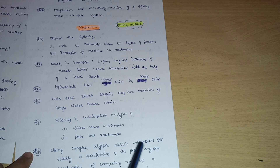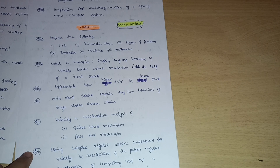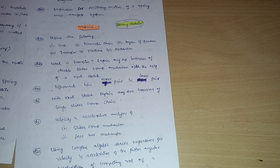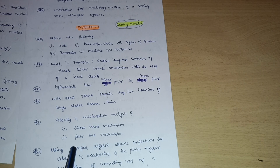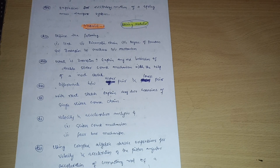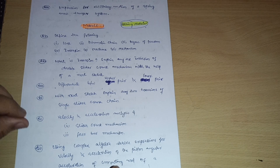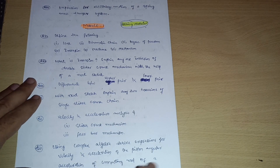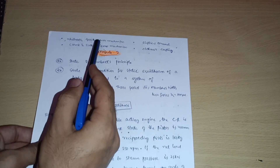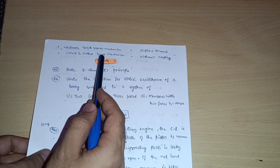Using complex algebra, derive expressions for velocity and acceleration of the piston and angular acceleration of the connecting rod of a single crank mechanism. You should also go through problems on this complex algebra method, which come in various forms. For previous year papers, search 'COM papers 18 scheme' on Google to get a variety of questions to practice. Also cover some theoretical questions like the Whitworth quick return mechanism, elliptical trammel, crank and slotted lever mechanism, and Oldham's coupling.